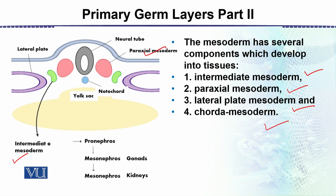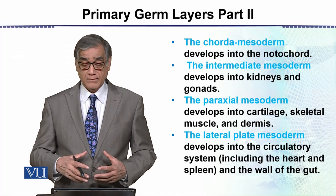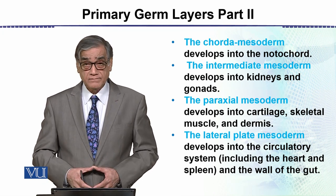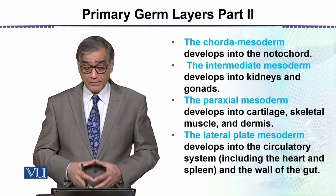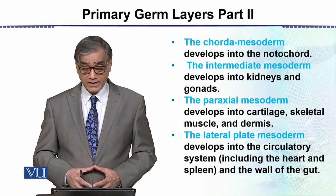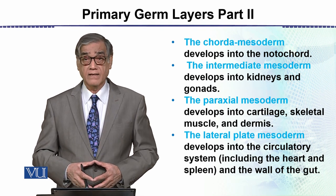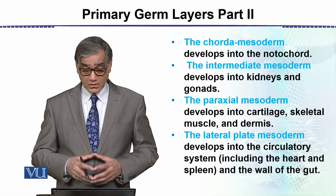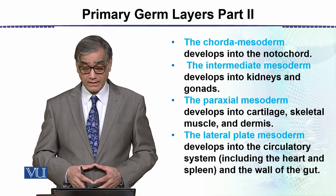The chordamesoderm gives rise to the notochord. The intermediate mesoderm develops into the kidneys and the gonads. The paraxial mesoderm develops into the cartilage, skeletal muscles, and the dermis. The lateral plate mesoderm develops into the circulatory system including the heart and the spleen, and the wall of the gut.